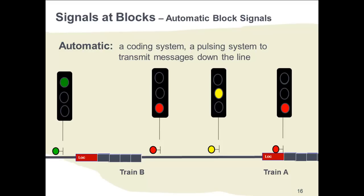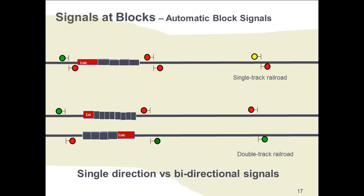There is a very simple logic sequence hardwired into each signal. When you have a red or stop-and-proceed behind train B, the downstream signal is yellow. For train A, this means approach and expect the next signal to be at a stop. All signaling systems transmit messages down the track by means of line-side wire of a coded system, typically a pulsing system.